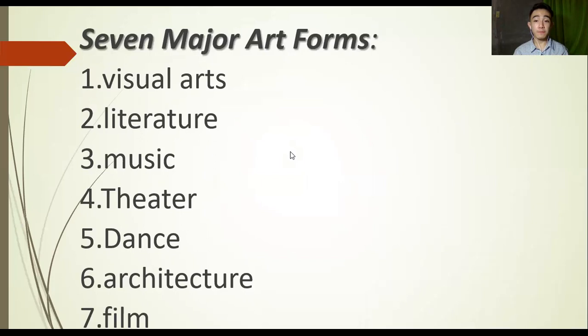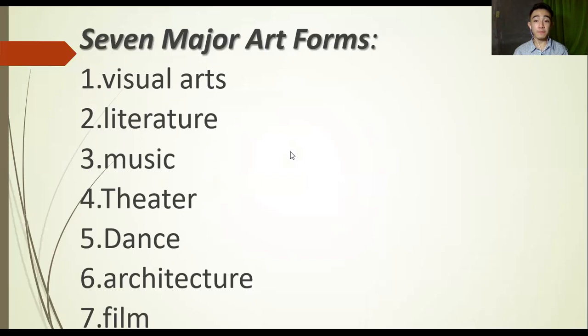We have seven major art forms. One is visual arts. Second is literature. Three, music. Four, theater. Five, dance. Sixth is architecture. Seven is film.